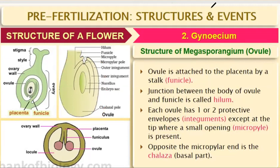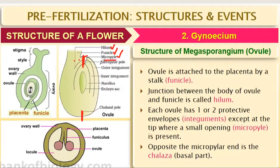The germ pore on the pollen grain allows the pollen tube to get out, and the micropyle in the ovule allows the pollen tube to enter so the male gametes can fuse inside. The micropyle is present on the opposite side of the chalaza. Hilum is the attachment point; funicle is the stalk; micropyle is the pore where the integuments are absent — that side is called the micropylar pole.